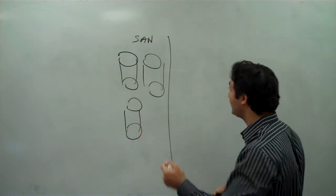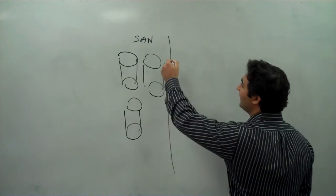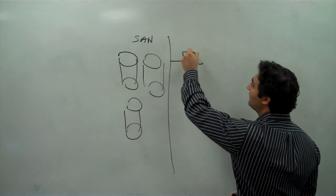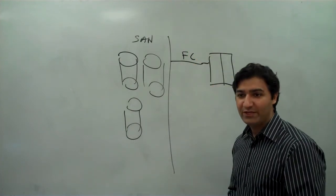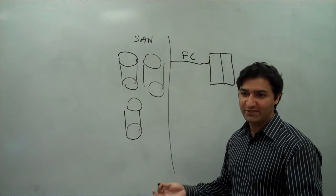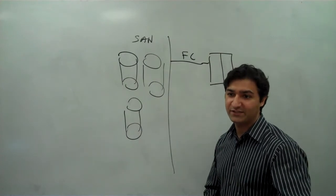Way number one is via fiber channel, which is what SANs speak. Fiber channel can be pushed out of the SAN and may end up on a fiber channel over IP device. Essentially, this is a fiber channel switch which happens to have a SAN extension card.